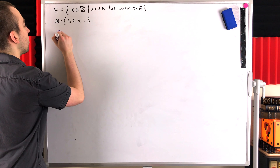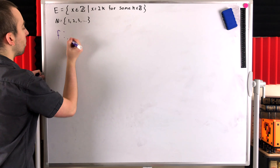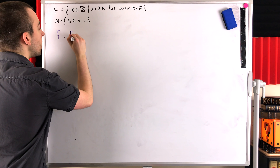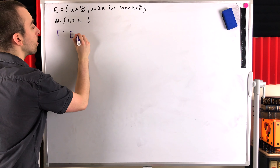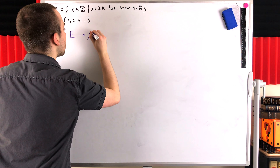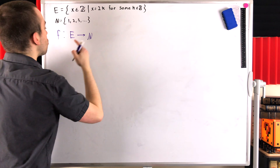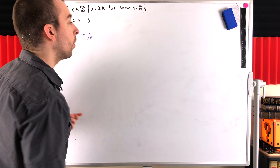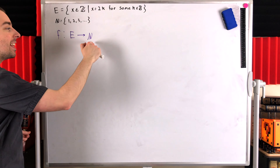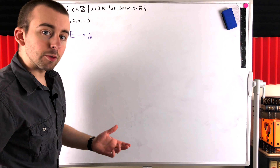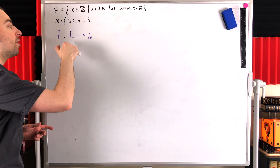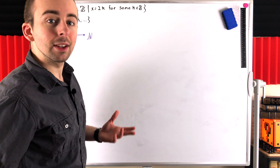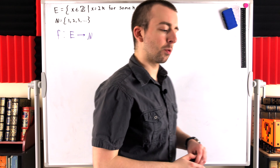All we have to do is come up with some function, say f, from the even numbers to the natural numbers, and then show that f is surjective, which means we need to show that given any natural number, we can find some even number that our function f will map to the given natural number.